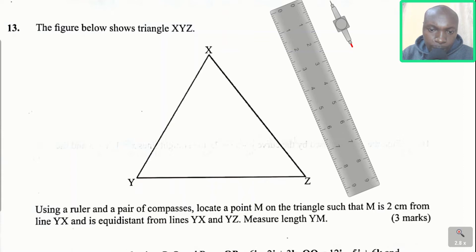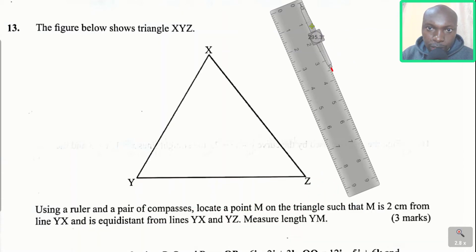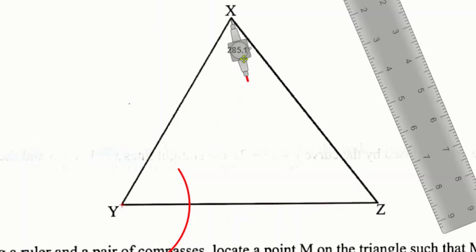Let us begin by locating point M such that M is 2 cm from line YX. To draw that, take a pair of compasses and take a measurement of 2 cm. With that measurement, stand at Y and mark an arc with the 2 cm. Then go to X and construct another arc in the same way.